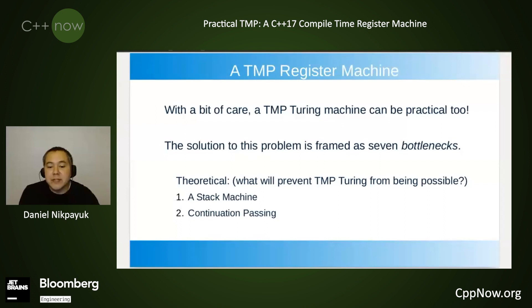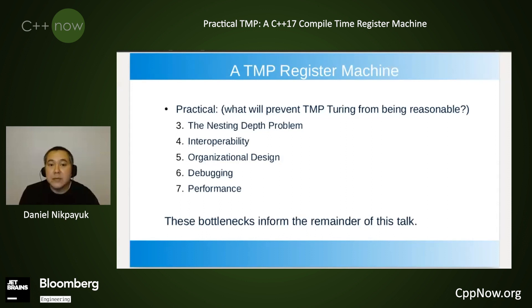I frame the solution to this problem as seven bottlenecks. The first two are theoretical — in the sense of, as a bottleneck, what would prevent TMP Turing from being possible? The first has to do with the idea of a stack machine, and then the second is continuation passing. The remaining five bottlenecks are practical: what will prevent TMP Turing from being reasonable? The third is the nesting depth problem, fourth is interoperability, fifth is organizational design, sixth is debugging, and number seven is performance.